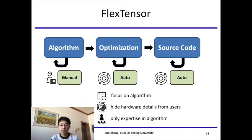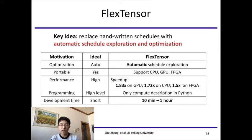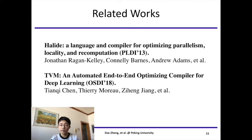The key idea of FlexTensor is to leverage schedule space exploration to generate a schedule rather than writing a schedule by hand. We show that FlexTensor achieves all what we want. It uses automatic schedule exploration for optimization. It supports CPU, GPU, and FPGA with high performance. It only needs compute description in Python. The development time is about 10 minutes to 1 hour. FlexTensor is based on previous work of Halide and TVM. It leverages the idea of compute and schedule from Halide and the code generation support from TVM.